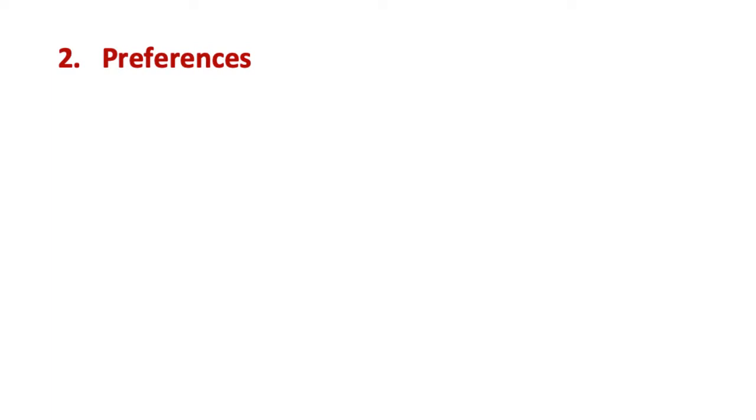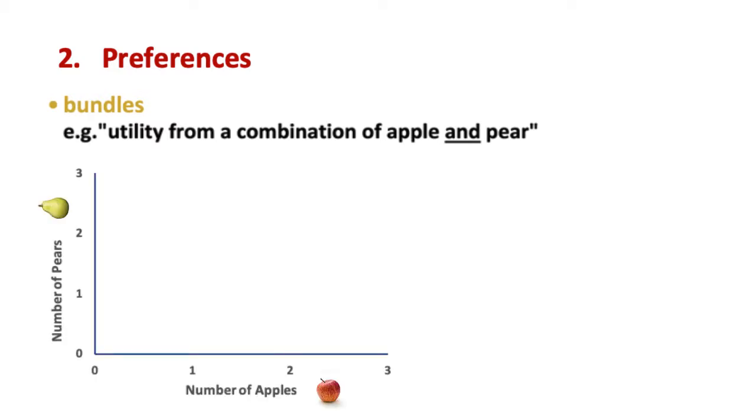Now, instead of just apples, suppose you have the choice of eating pears as well. How can we show your preferences when considering a combination of apples and pears, called bundles? Let's see how this would visually look. In this diagram, we have the number of apples on the horizontal axis and the number of pears on the vertical axis. Suppose you have the choice of consuming one apple and three pears, called bundle A.